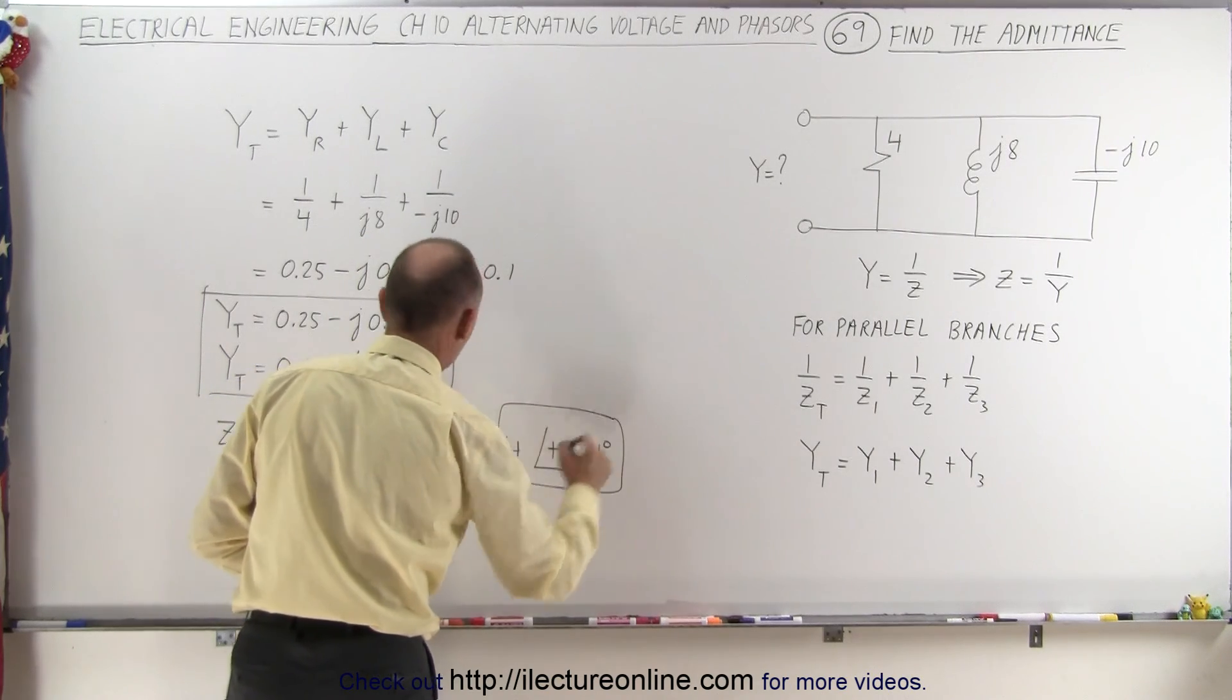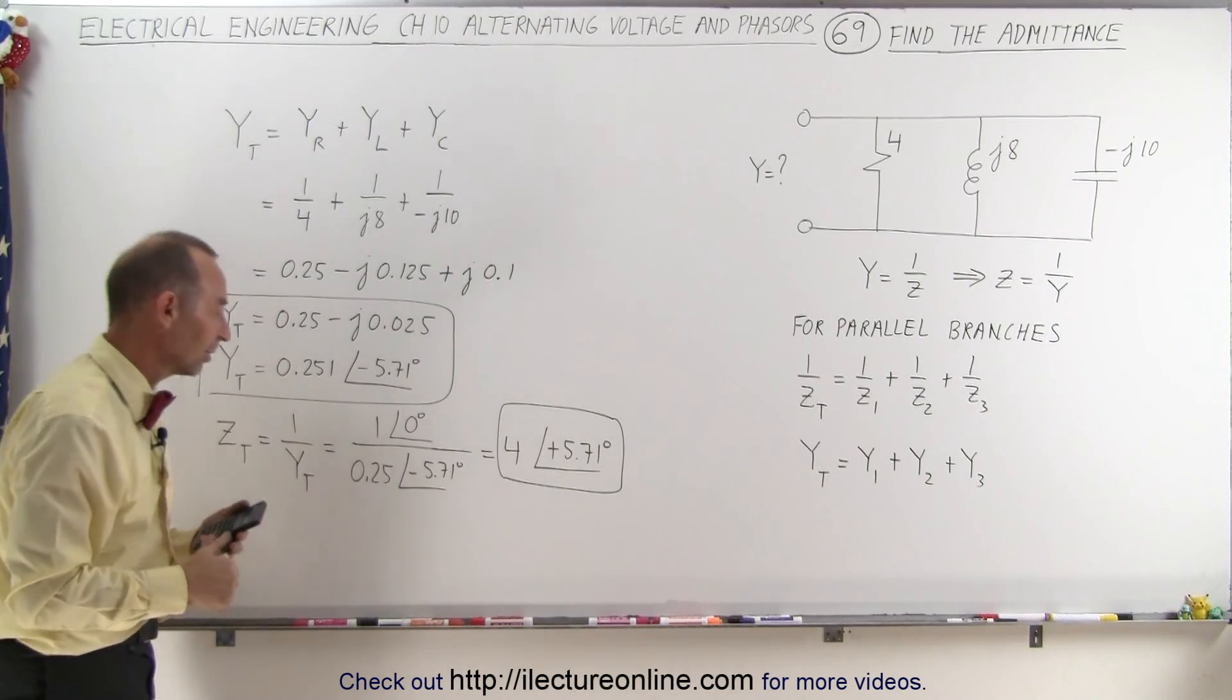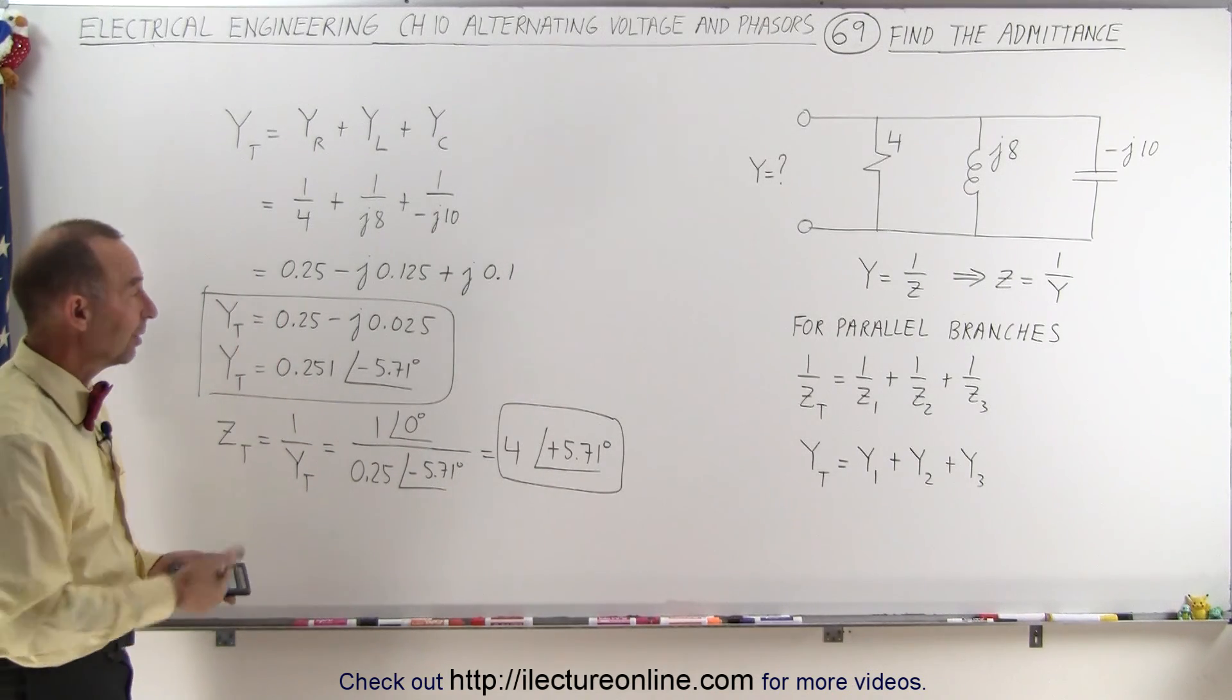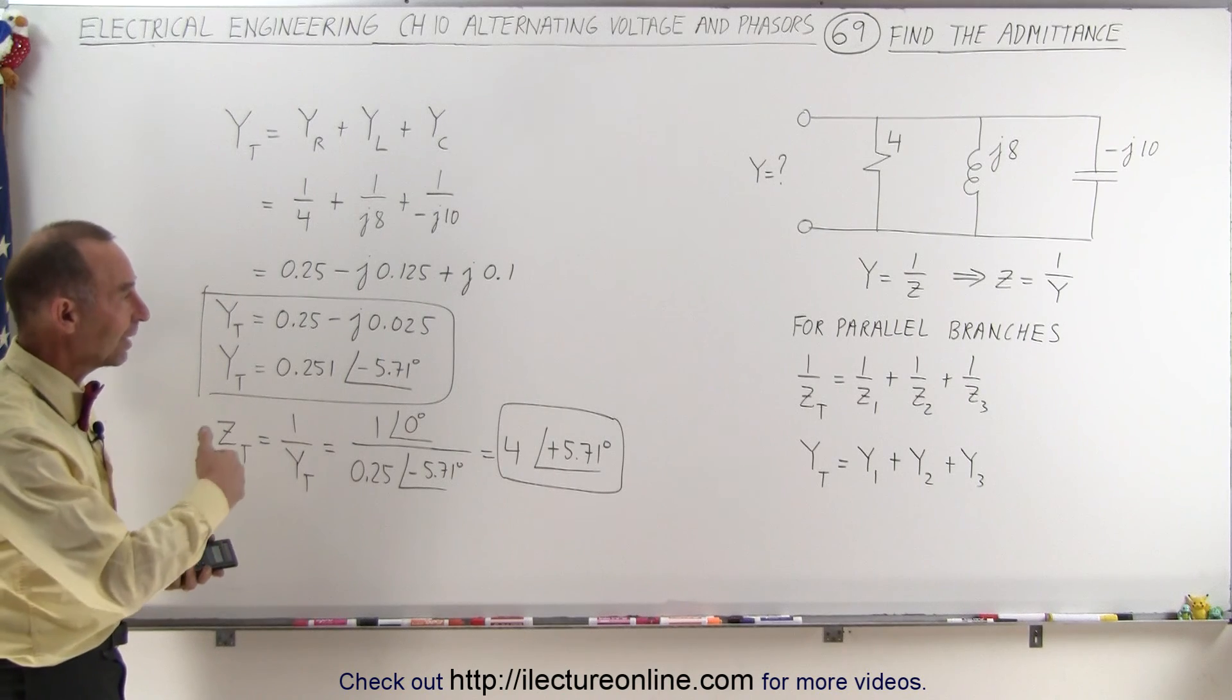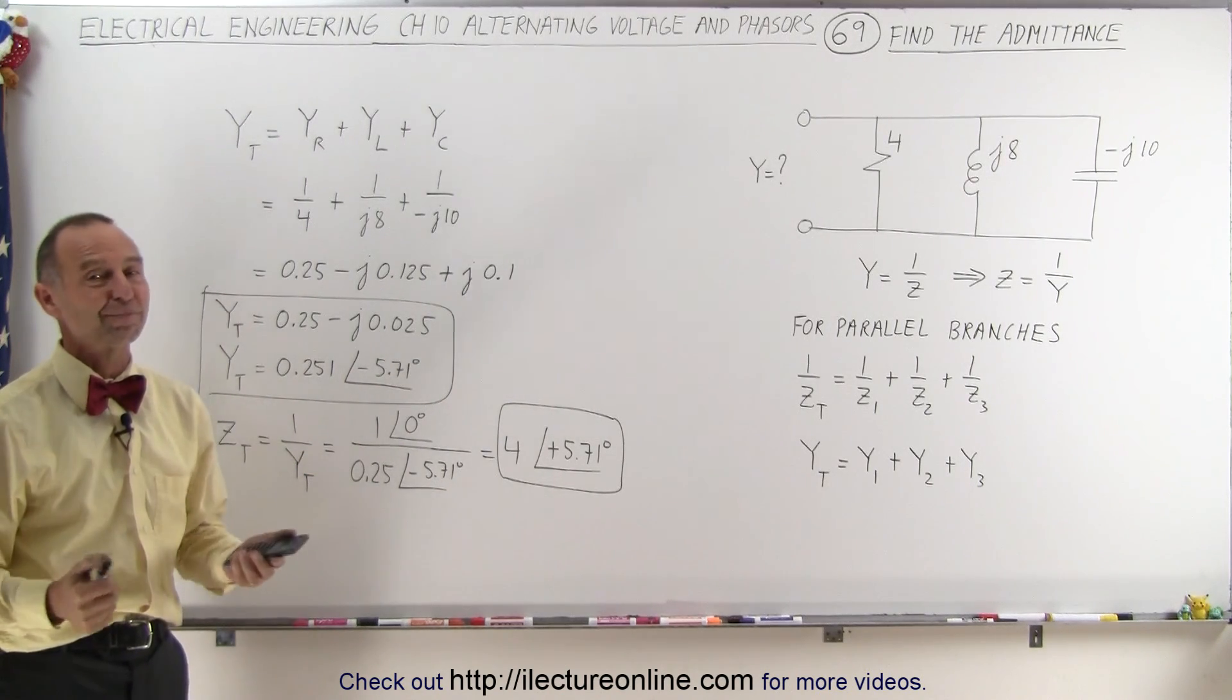And so that would be the impedance of the circuit, while this would be the admittance of the circuit. And so it's quite easily done by first finding the admittance and then reconverting back to the impedance. That's how we do that.